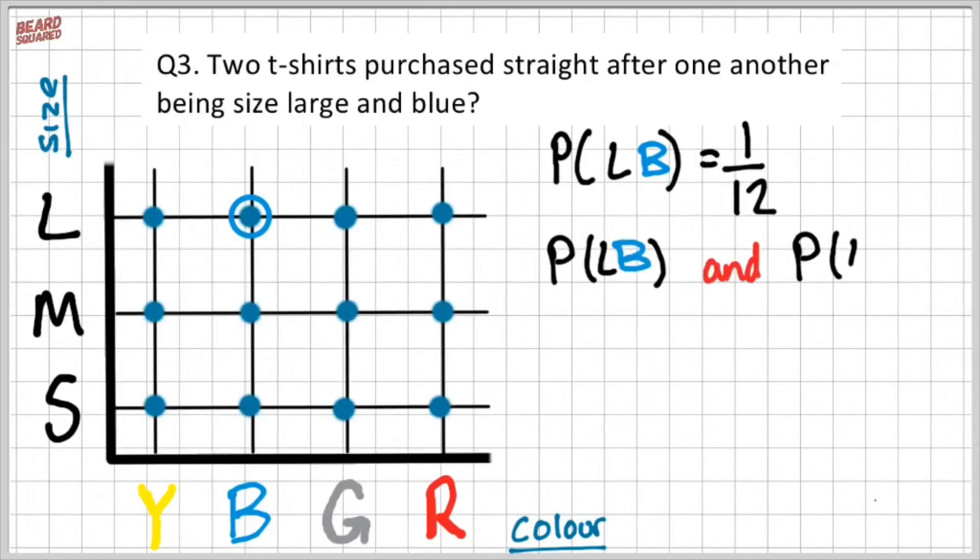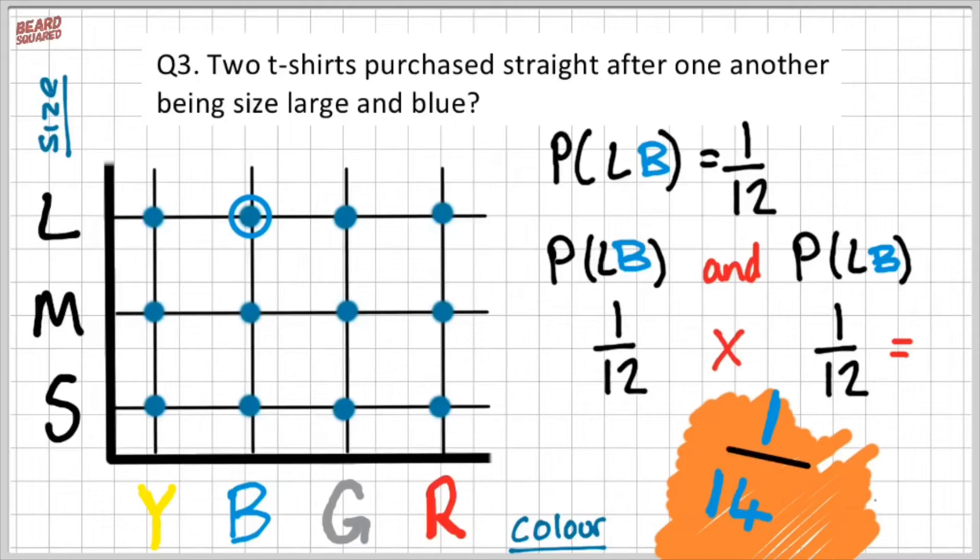And so the question is asking me, what's the probability of getting a large blue and a large blue t-shirt? And so that would be 1/12 times 1/12, which will give me a total probability of 1 out of 144.